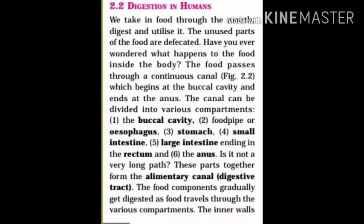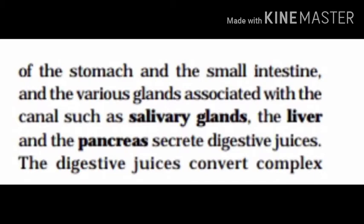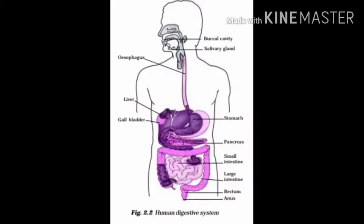The food components gradually get digested as food travels through the various compartments. The inner walls of the stomach and the small intestine, and the various glands associated with the canal such as the liver and the pancreas, secrete digestive juices. The liver is one of the glands that helps in the digestion. Here is the figure of the human digestive system: buccal cavity, salivary gland, esophagus, liver, gall bladder, stomach, pancreas, small intestine, large intestine, rectum and anus.